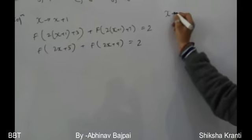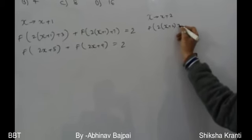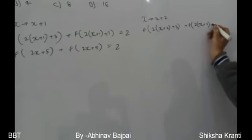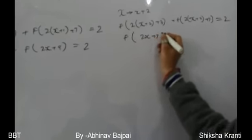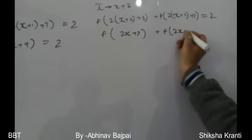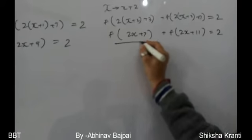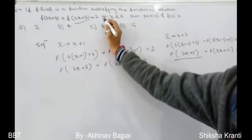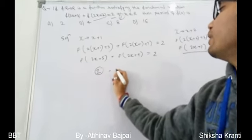Next, substitute x by x + 2 in the original equation. We get f(2(x+2) + 3) + f(2(x+2) + 7) = 2, which simplifies to f(2x + 7) + f(2x + 11) = 2. We name the original equation as equation 1 and this result as equation 2.